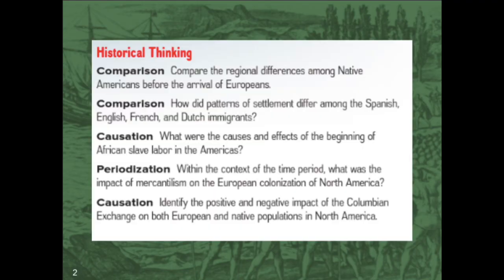That brings us to our historical thinking skills for this chapter. For comparison, we're going to see how well you can compare the regional differences among Native Americans before the arrival of Europeans in the 15th century. Remember that Native Americans are not monolithic — it's very false to look at all of them in the same way. They have a lot of nuance and variation between different groups depending on where they lived and what culture they were brought up in, just like anybody else.